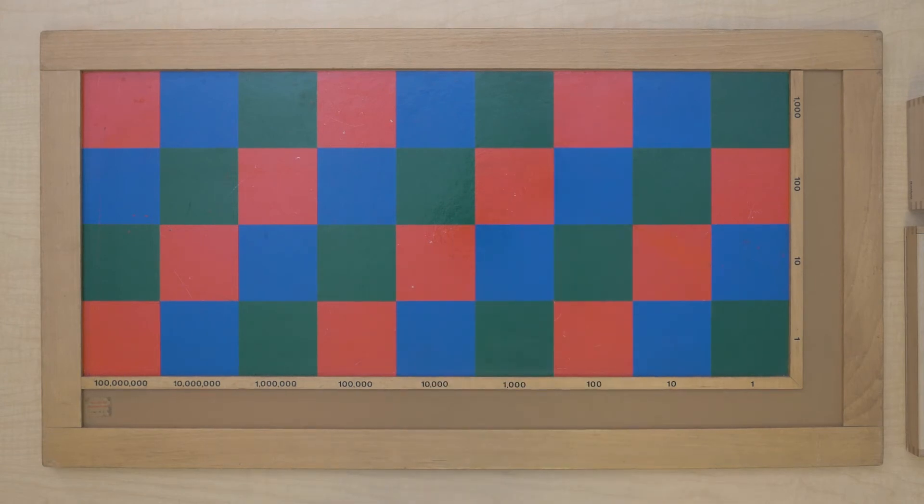So I want to show you how we read numbers on the checkerboard. So I have my bead bars here. I'm gonna put this bead bar here. That means I have five units. But if I put the bead bar here it means I have five hundreds. This is 500 because it's the hundred square.